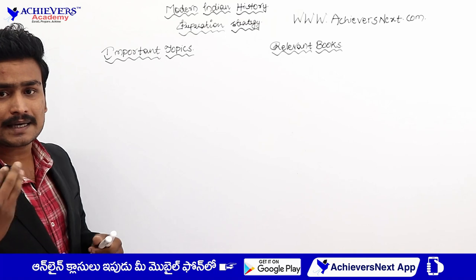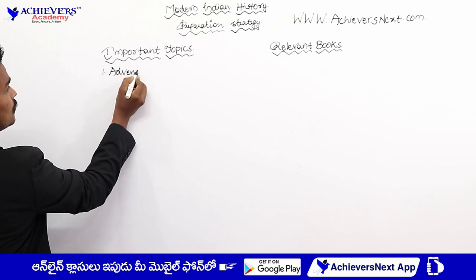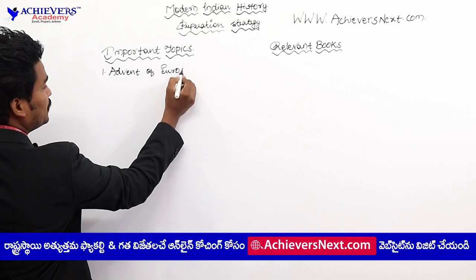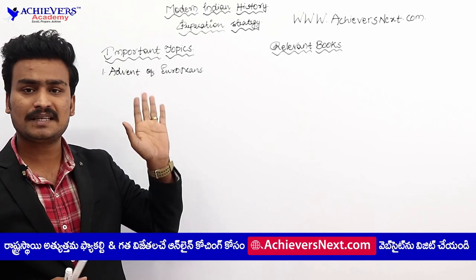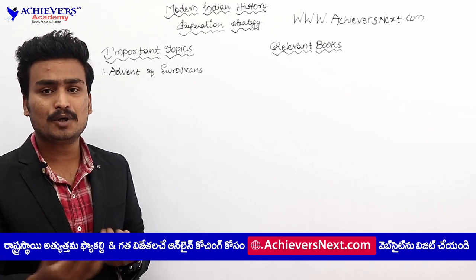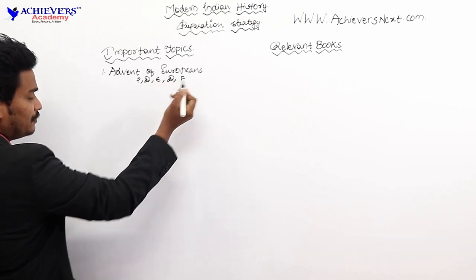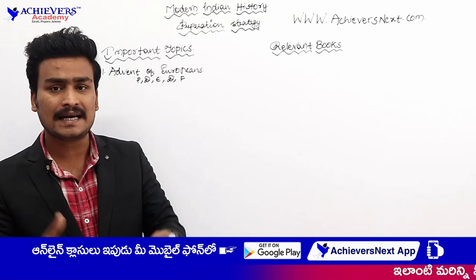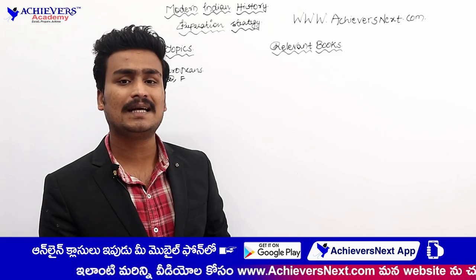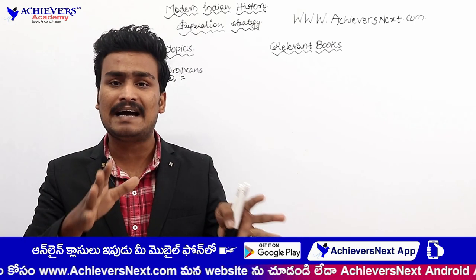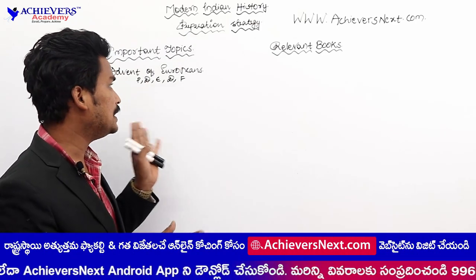The first important topic for modern Indian history is the Advent of Europeans. In the 15th century, many Europeans came to India — Portuguese, Dutch, English, Danes, and French. We need to study their important governors, what kind of relations they had with Indian kings, and what areas they controlled. This topic is very important.